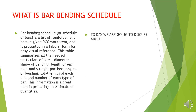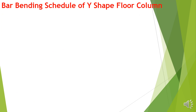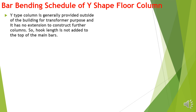Today we are going to discuss about the Y-shaped columns. The remaining details will come in the future presentations. The barbending schedule of a Y-shaped floor column — a Y-shaped column is generally provided outside the building for a transformer purpose and it has no extension to construct further column. So the hook length is not added to the top of the main bars.